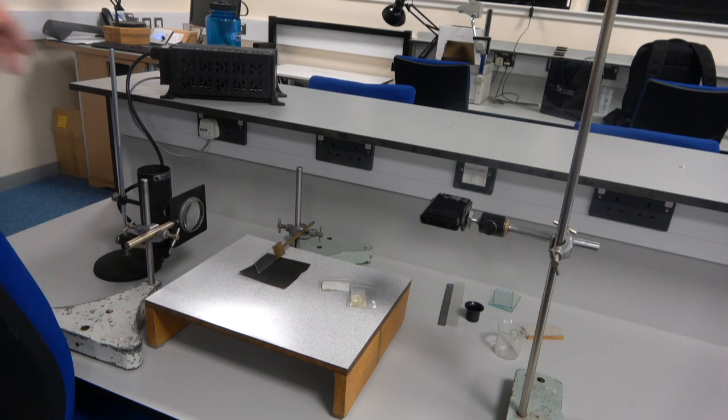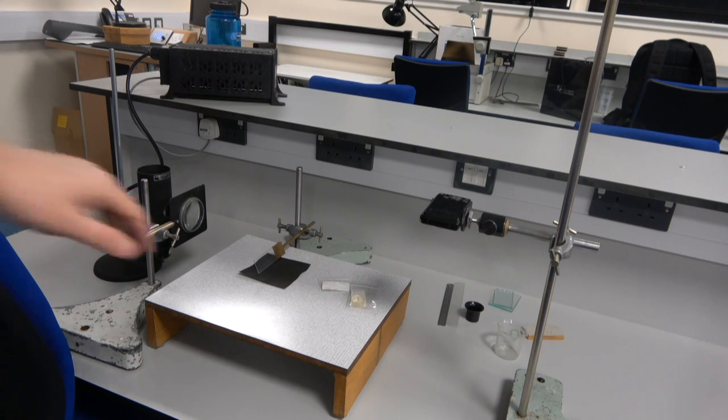Now, the glass slide is important because we're going to angle it so that the light coming from the condenser gets reflected down onto the plate and then transmitted back up through as it reflects off the system of lenses.